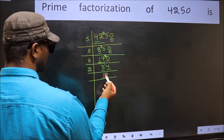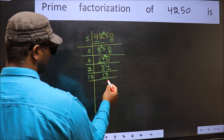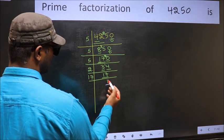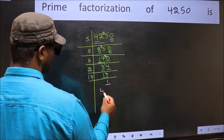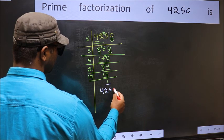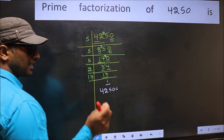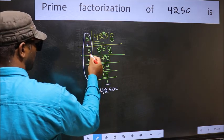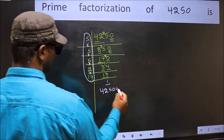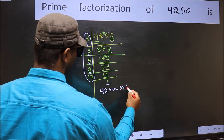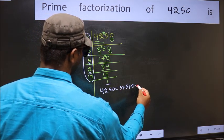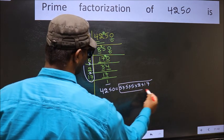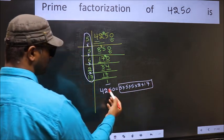Now we have 17. 17 is a prime number, so 17×1 is 17, and we get 1 here. So the prime factorization of 4250 is: 4250 = 5 × 5 × 5 × 5 × 2 × 17. This is the prime factorization of 4250.